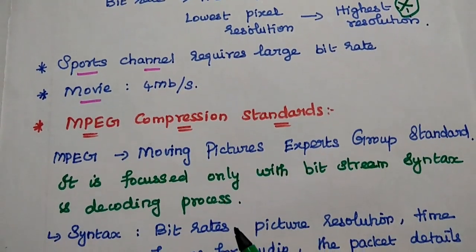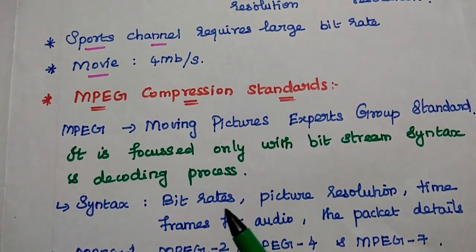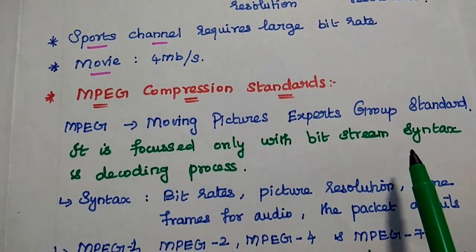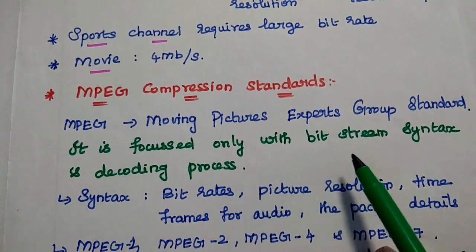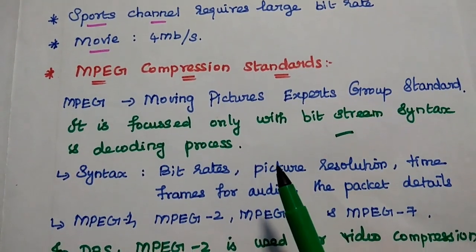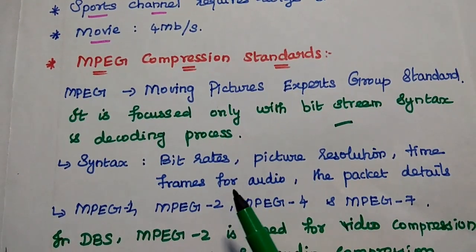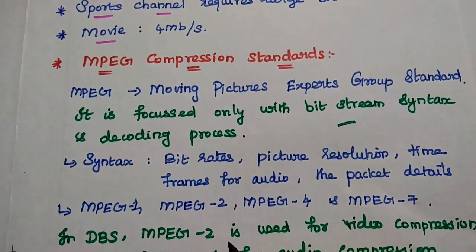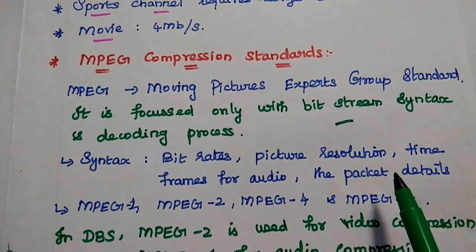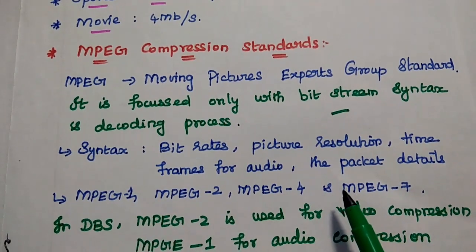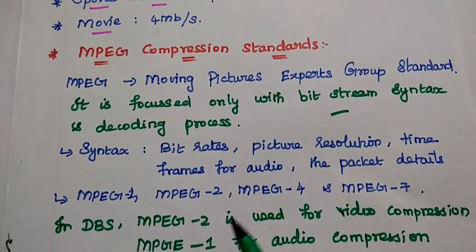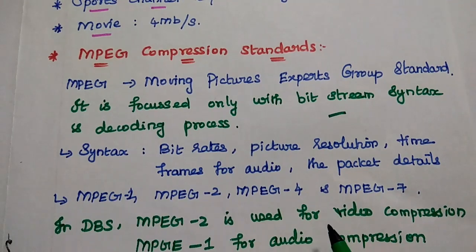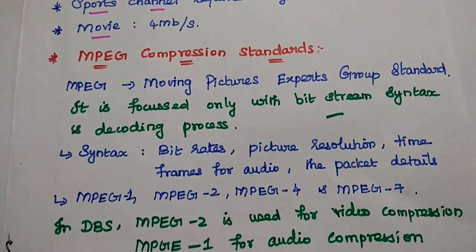The next parameter is the MPEG compression standard, which is very important in DBS systems. MPEG stands for Moving Pictures Experts Group standard. It focuses on bitstream syntax and decoding process, which includes bit rates, picture resolution, time frames for audio, packet details, and other fine signal details. Different MPEG standards are available: MPEG-1, 2, 4, and 7. In direct broadcast satellites, MPEG-2 is used for video compression and MPEG-1 is used for audio compression.